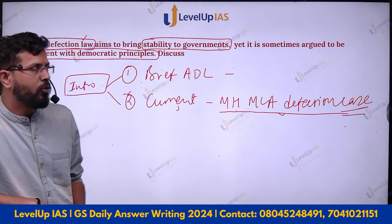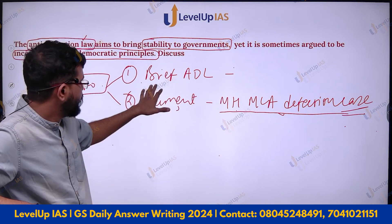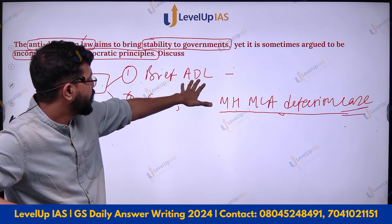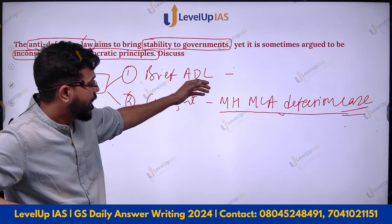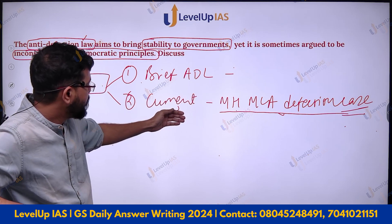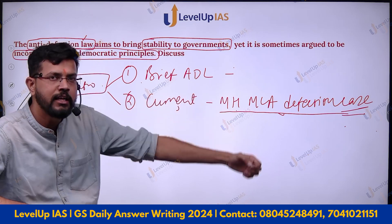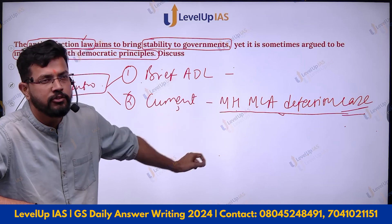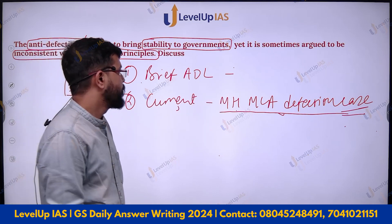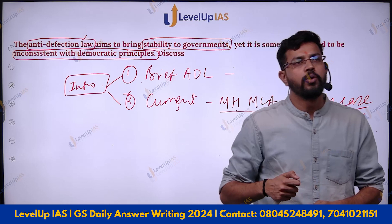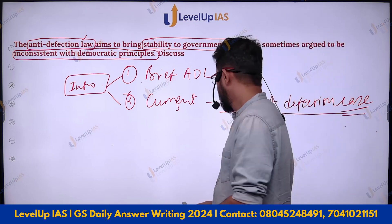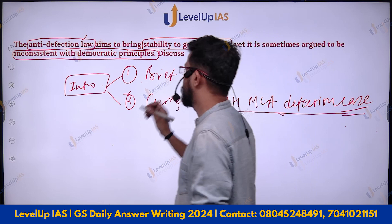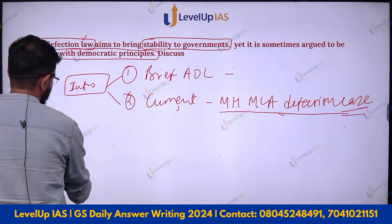I would suggest introducing the particular topic in three to four lines about what exactly anti-defection law is, and then in the second paragraph writing two to three lines about the current situation or context. This will be a perfect introduction to start with. Now for the body, the first part of the question.